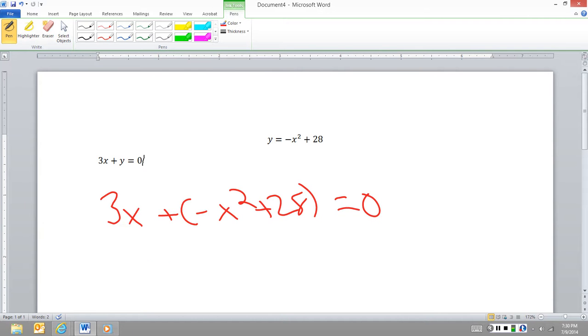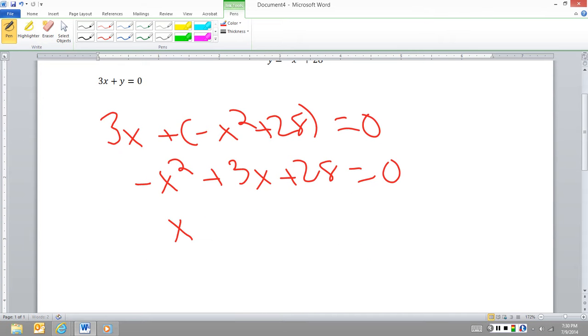So I'm left with negative x squared plus 3x plus 28 equals 0. I'm going to divide by negative 1 to make this a little easier just to look at.